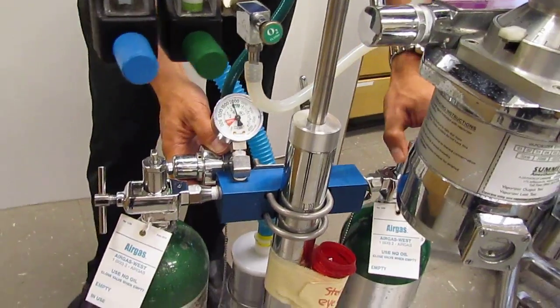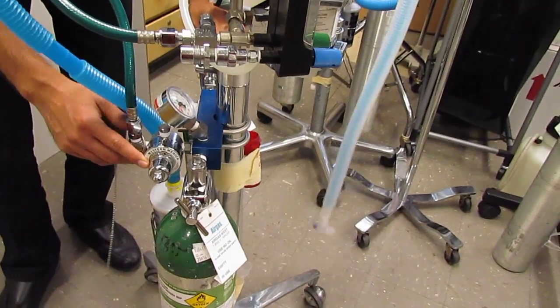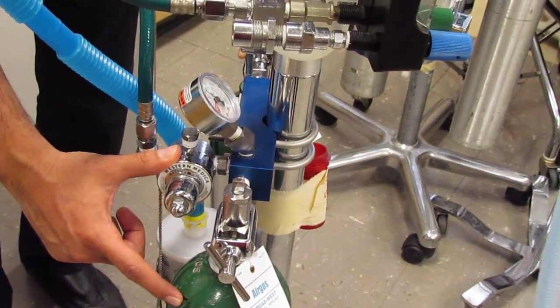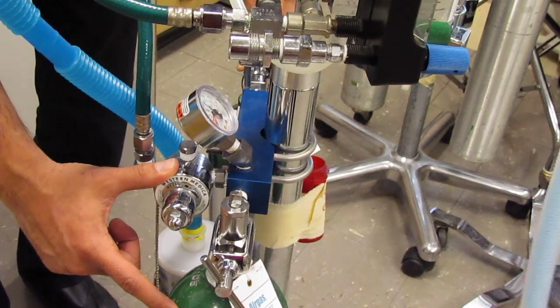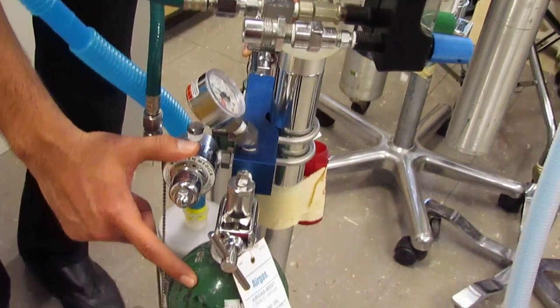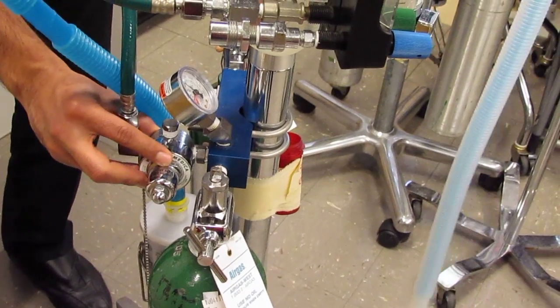Just behind that, we have our first major component, which is our pressure-reducing valve. The pressure-reducing valve reduces the pressure of the oxygen coming out of the tank from, let's say, 2,000 psi to 50 psi. If we only had 500 psi left in our tank, it still reduces it down to 50. So it reduces it down to about 50 psi.